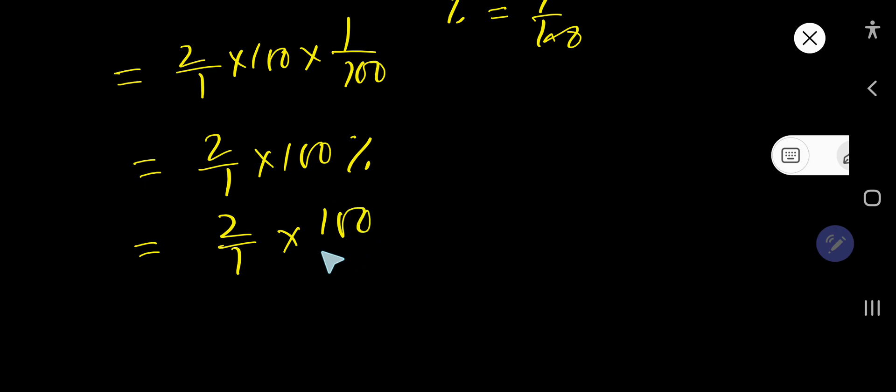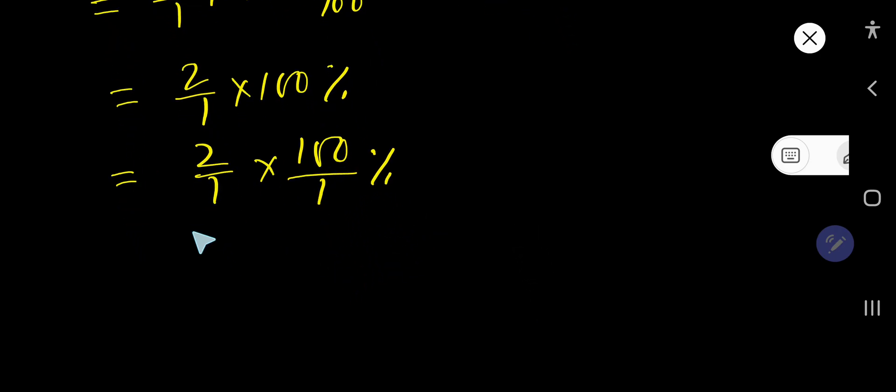So you need to multiply top to top and bottom to bottom. 200, 1 times 1 is 1, percent. That is 200 percent.